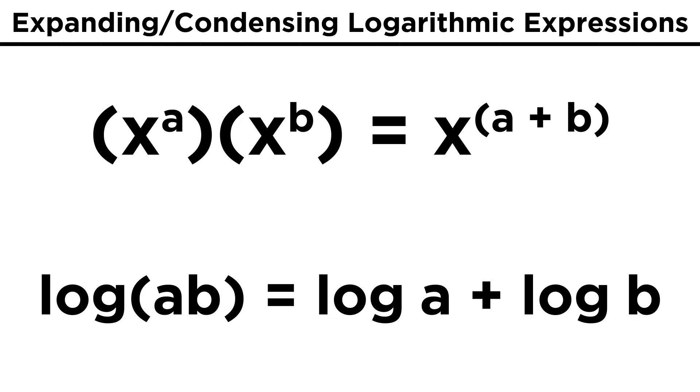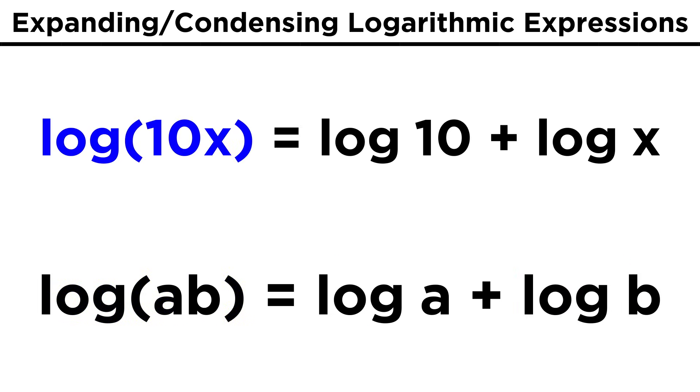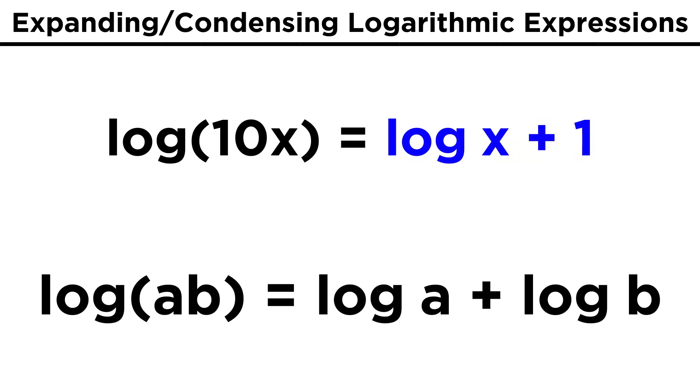Because logarithms are essentially exponents, then it should follow that for any base, including base ten, which we will assume for the time being, log of AB equals log of A plus log of B. That means we can take something like log of ten X and turn it into log of ten plus log of X. Log of ten is one, so this becomes log of X plus one.